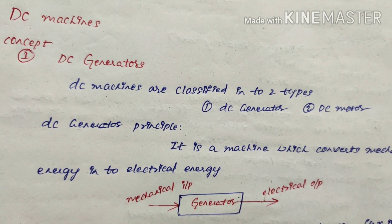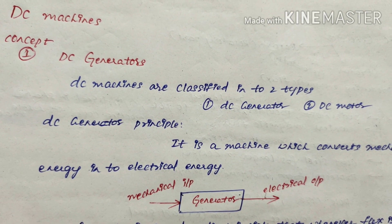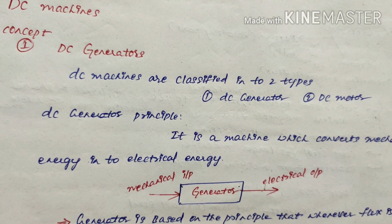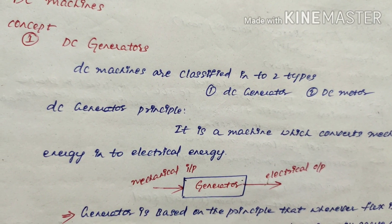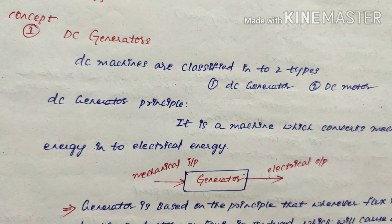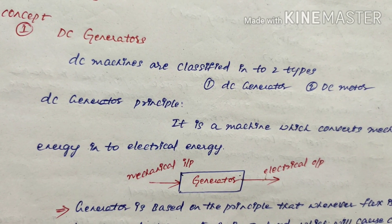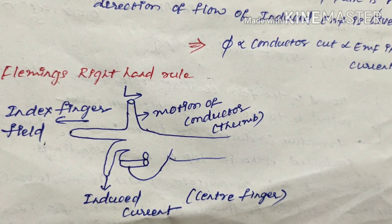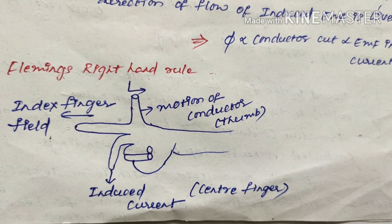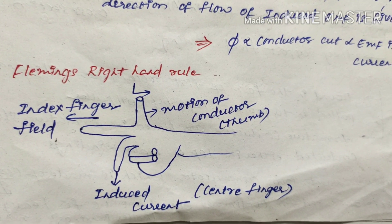A generator is based on the principle that whenever a flux is cut by a conductor — that is, conductors rotating inside the generator cut the flux — an EMF gets induced, which causes current to flow inside the conductor when a closed path is created. The direction of the induced EMF is given by Fleming's Right Hand Rule.